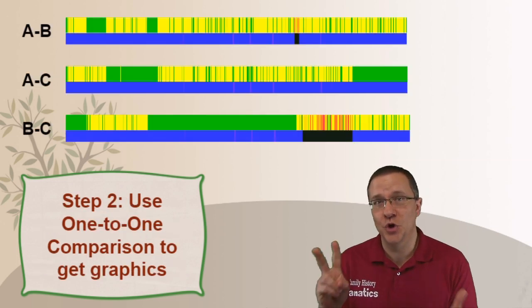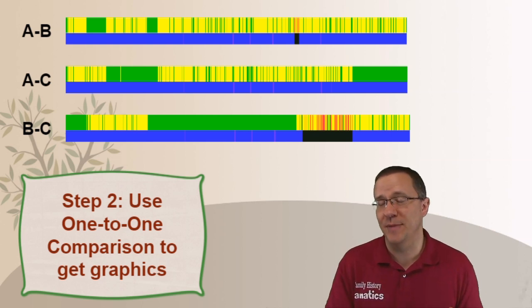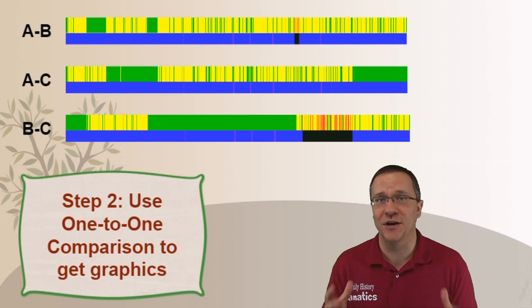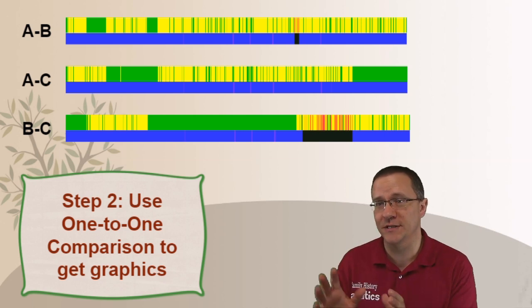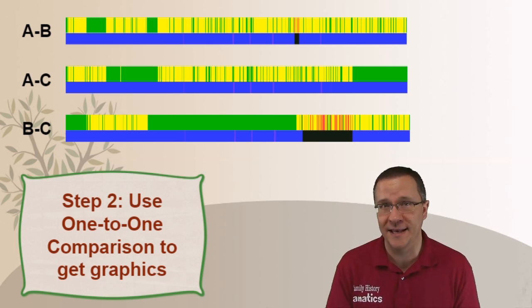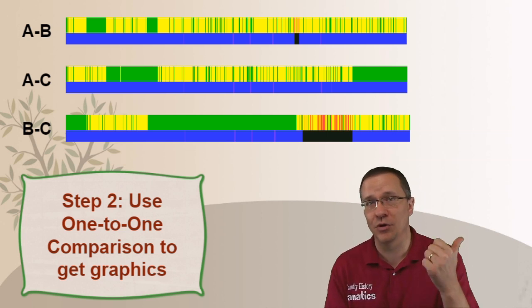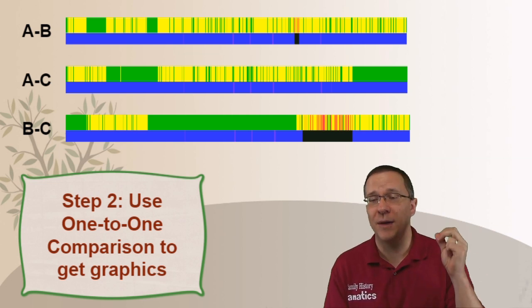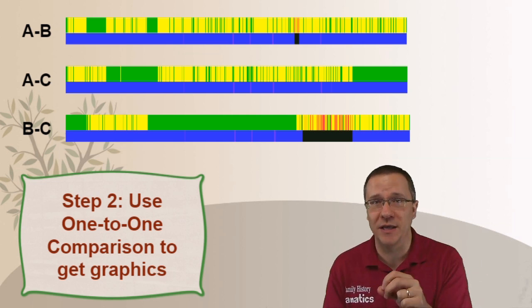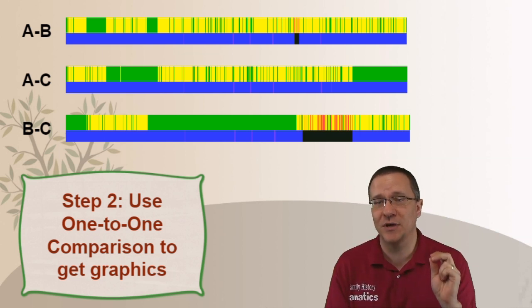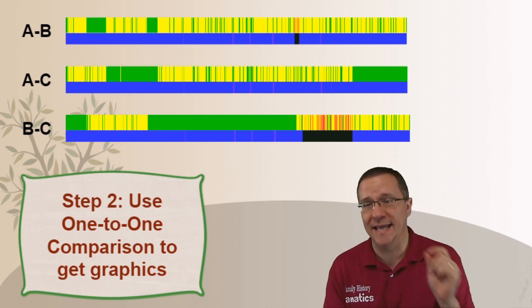So step two of the setup is you want to go on to GEDmatch and use the one-to-one tool, and for each one of the siblings you want to get the graphics of the shared DNA. So again this is for a single chromosome. I'm using chromosome number 10 and this is three of my brothers. So I have brother A, brother B, brother C. So I've grabbed a comparison between A and B, I've grabbed a comparison between A and C, and I've grabbed the comparison between B and C.